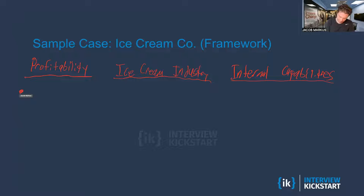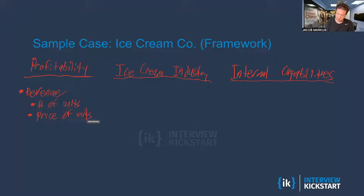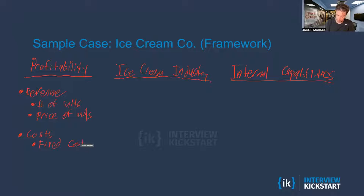Within profitability, revenue is one of the key differences here. I know that revenue is composed of the number of units that we sell and the price of those units — so that's two pieces of important information to look into. And then costs — we know they're flat — but maybe there's still a way to ask: are they above the industry standard? Can we reduce them? Are they similar to our competitors? So there's fixed and variable costs within the ice cream industry.